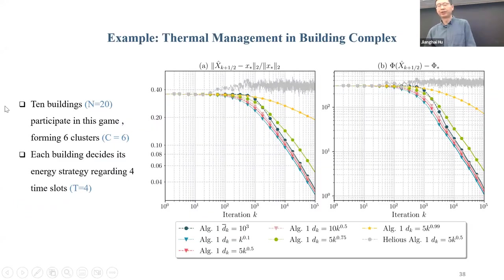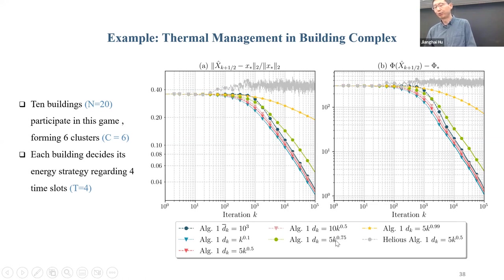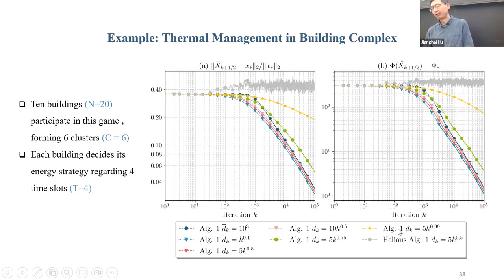Using the same building example with delays: the existing result doesn't even converge to the solution, but our algorithm does. The green curve shows convergence when the delay grows polynomially in time — we can still handle that and maintain convergence to the critical point. The yellow curve shows an even faster-growing delay; our algorithm still roughly tracks but this does not satisfy our theorem conditions, so we do not theoretically predict convergence in this case.